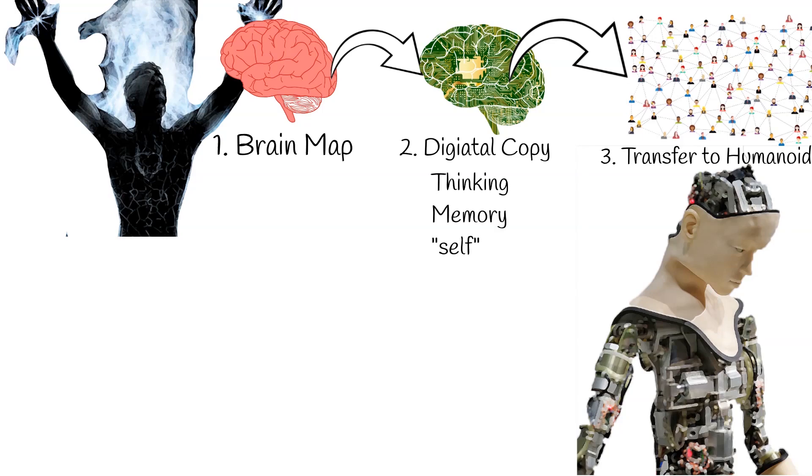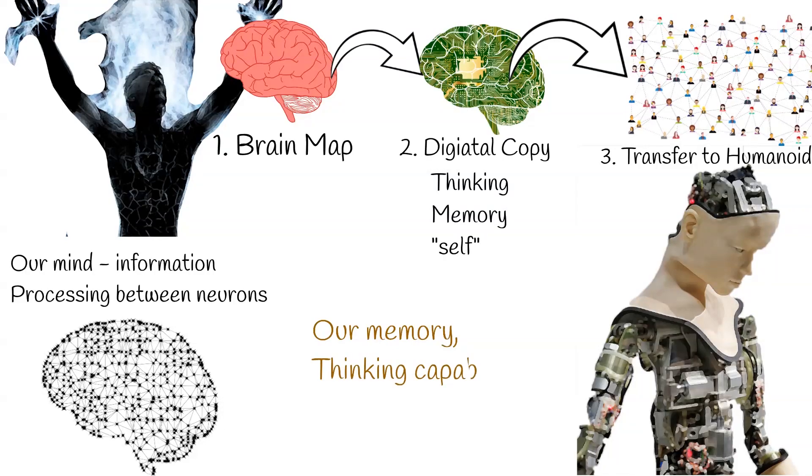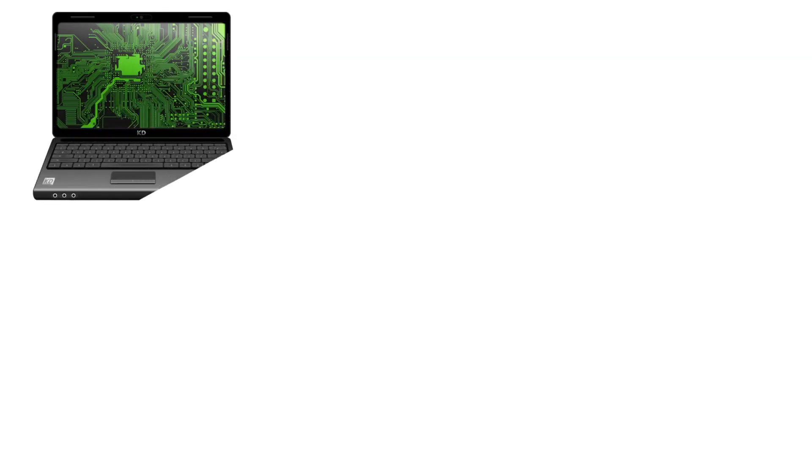According to current neuroscientific knowledge, our mind is information processing between neuronal networks. It means our memory, thinking capabilities, and consciousness are governed by purely physical processes. And it can be explained by classical physical laws.